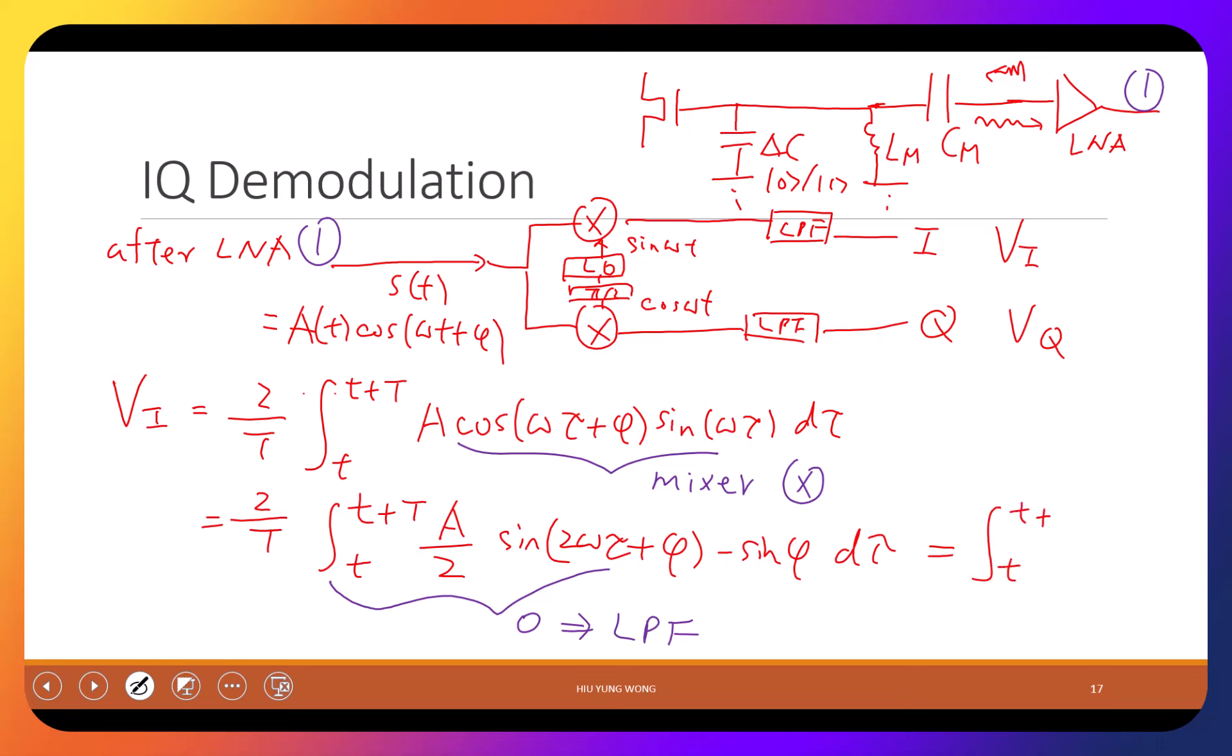So all you have after this is just equals to t to t plus time period A over 2. Oh no, when that one is gone, then I only have t divided by t, and then A over 2 times t, because this is constant. Sine phi is a constant. So this one will give me negative A sine phi.